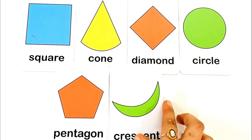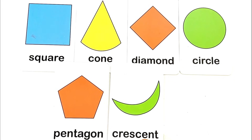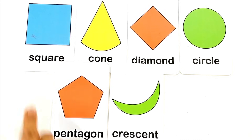C for crescent. C R E S C E N T, crescent. This is crescent shape, and the color is green color.